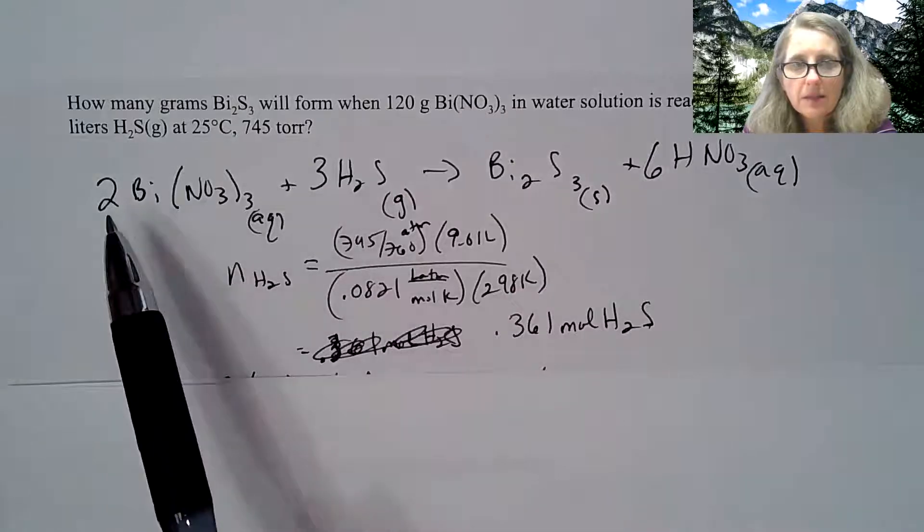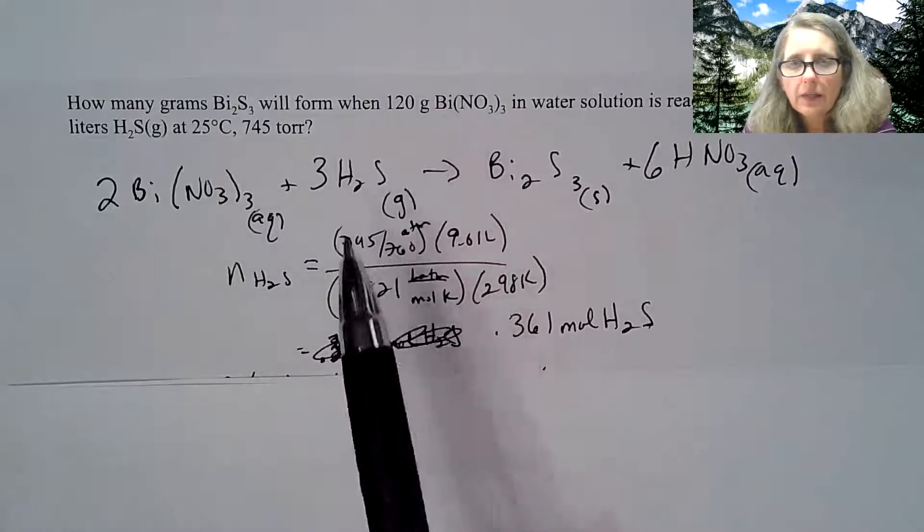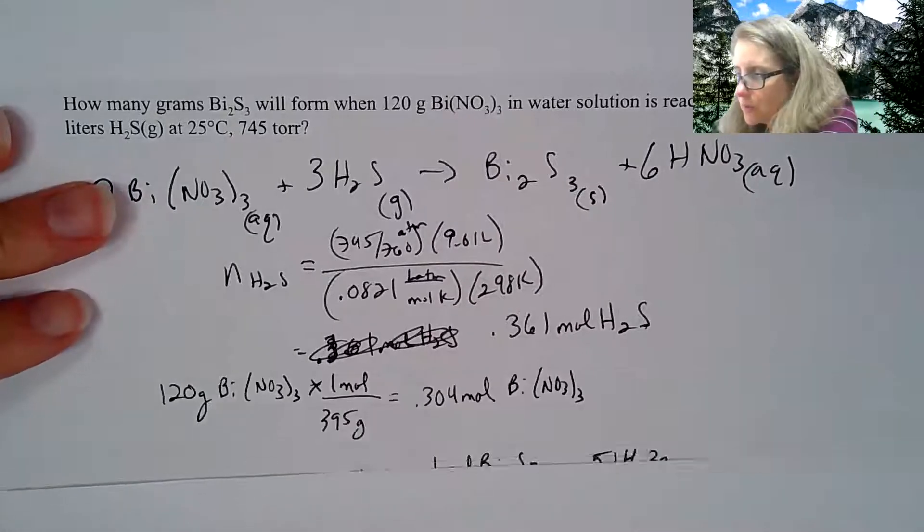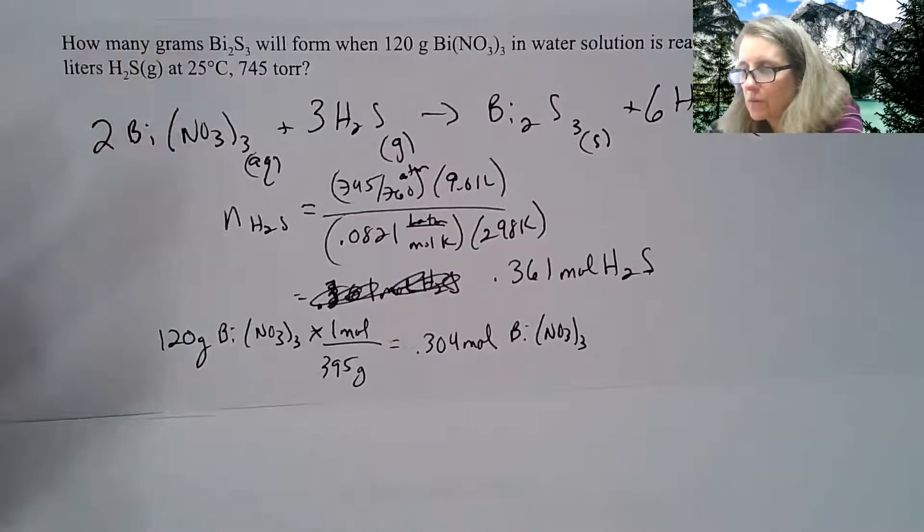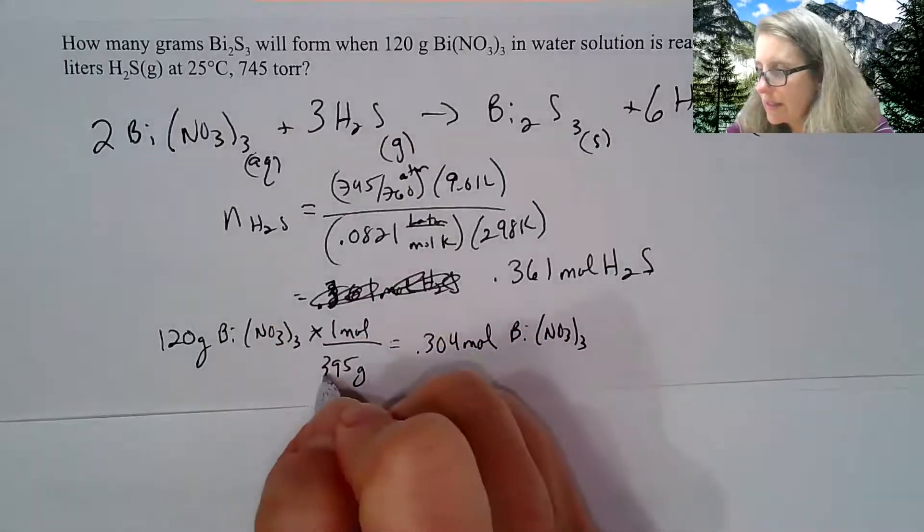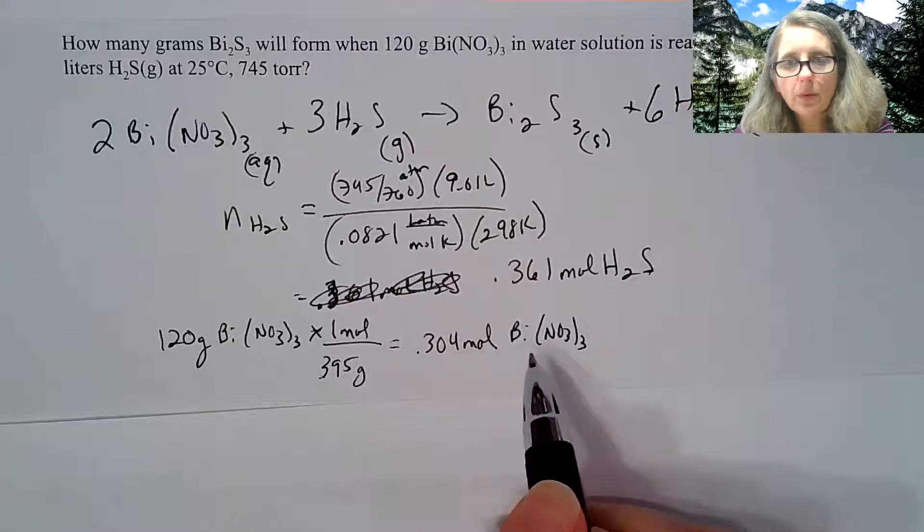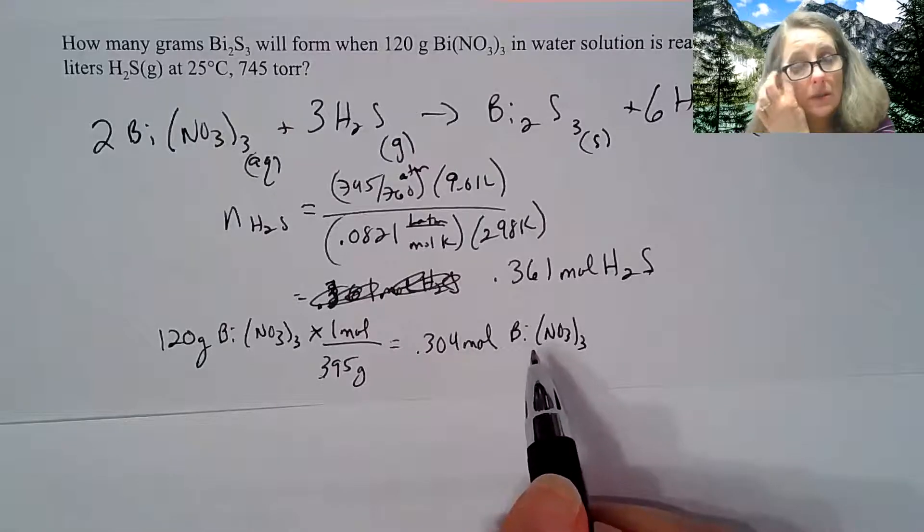I need to look at the balanced chemical equation. I need to take that 120 of my other reactant and figure out how many moles I get. If I take the 120 and divide it by its molar mass, which is about 395, I get about 0.304 moles of bismuth(III) nitrate.